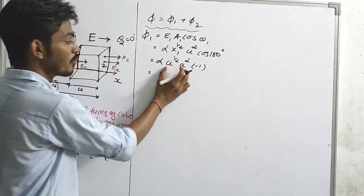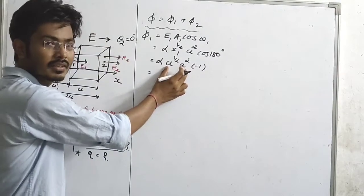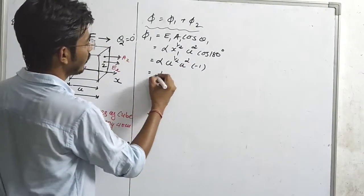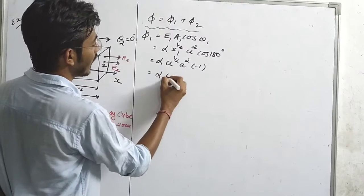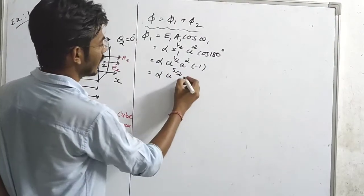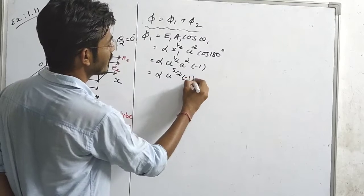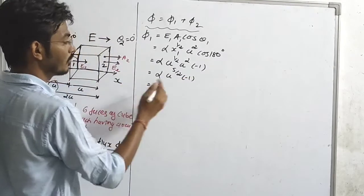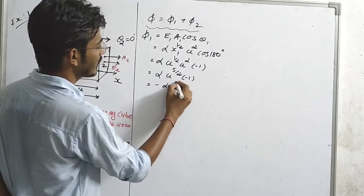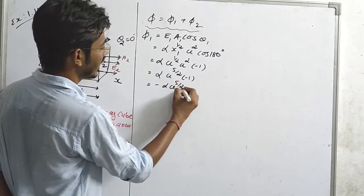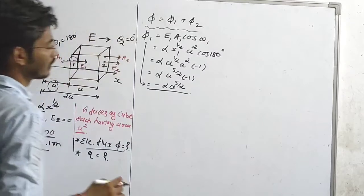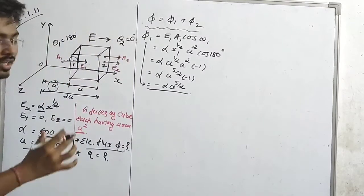Therefore, phi 1 equals minus alpha times a raised to 5/2. The bases are the same so the powers are added: 1/2 plus 2 equals 5/2. So phi 1 equals minus alpha times a raised to 5 divided by 2. This is our value for phi 1.